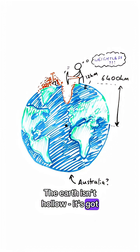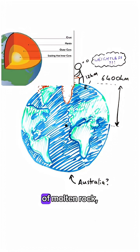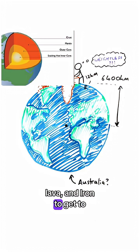The earth isn't hollow, it's got layers. You'd have to dig through lots of molten rock, lava, and iron to get to the center.